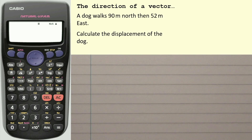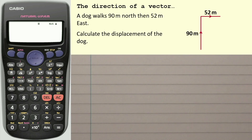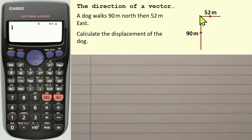First thing I would do is actually sketch what's going on. I would draw a line — it doesn't need to be drawn to scale — which represents that 90 metres north. And where that line ends, that's the first vector; I would then start the second one. That's what's known as adding vectors nose to tail. Where the first vector, 90 metres north, ends, I'm then starting the second vector.